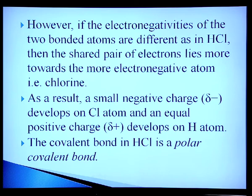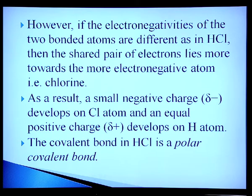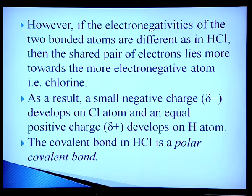However, if the electronegativity of two bonded atoms is different, as in hydrochloric acid (HCl), then the shared pair of electrons lies more towards the more electronegative atom — chlorine. As a result, a small negative charge (δ−) develops on the chlorine atom and an equal positive charge develops on the hydrogen atom. The covalent bond in hydrochloric acid is therefore a polar covalent bond.